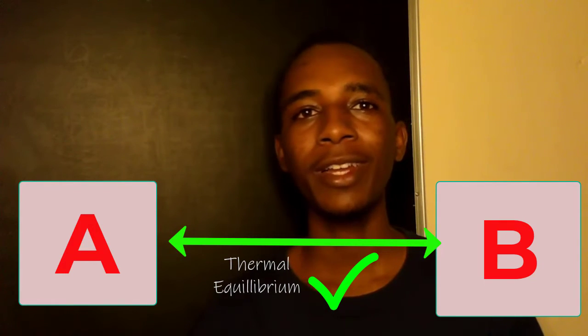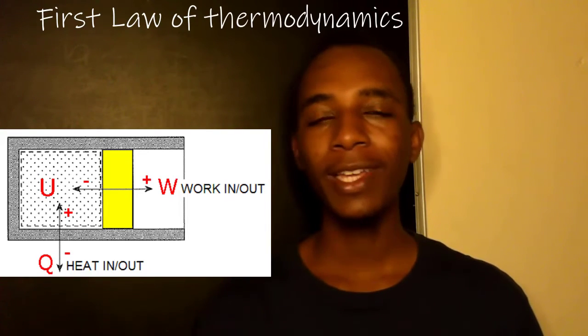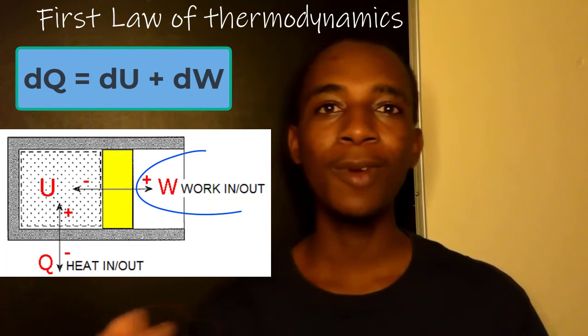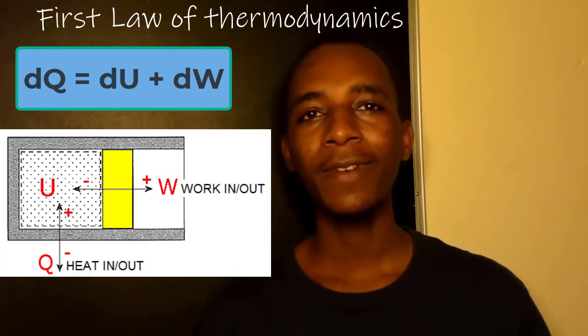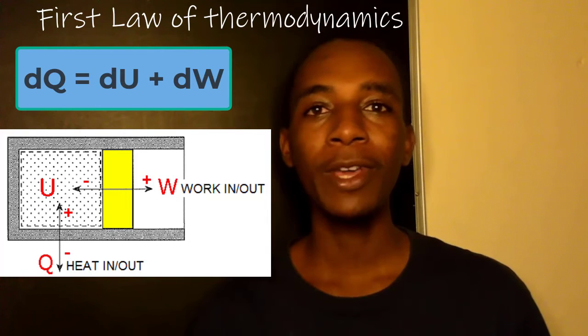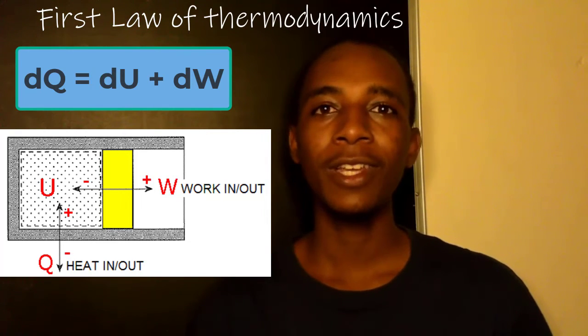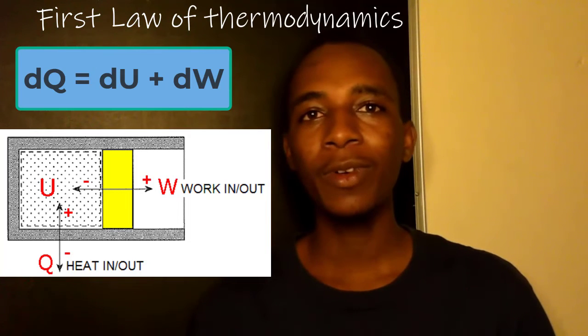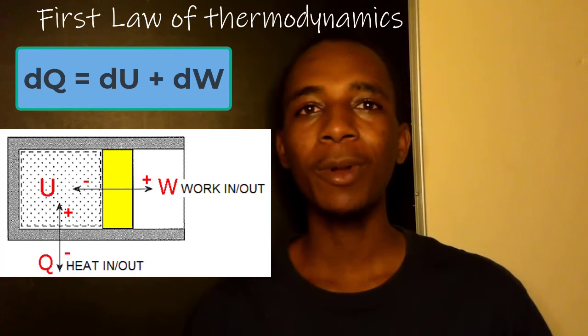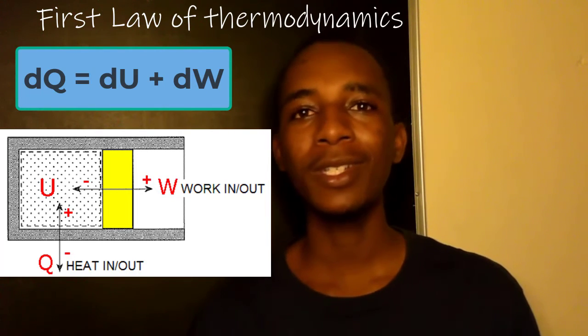Now, how does this relate to the other laws of thermodynamics and why is it the most fundamental? I'll make allusion to the first two laws of thermodynamics. The first law says if I supply heat to a closed system, then this heat is going to increase the internal energy and do work on the surroundings. But how do we even define heat energy before talking about temperature? Because in order to talk about heat, heat is a form of energy that increases temperature when gained and reduces temperature when lost. So we cannot talk about heat appropriately without first defining what temperature is.